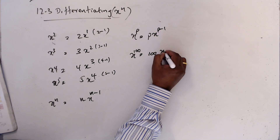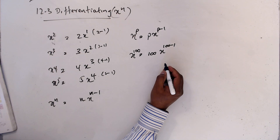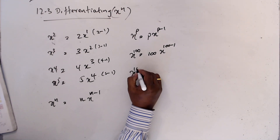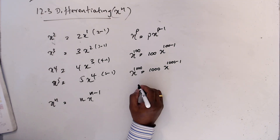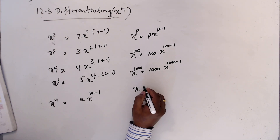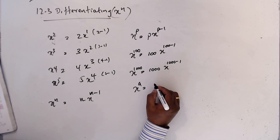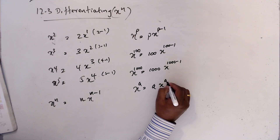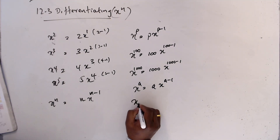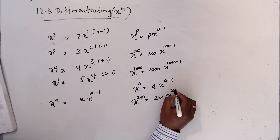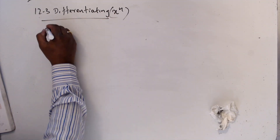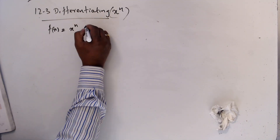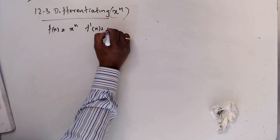For example, x¹⁰⁰ differentiated gives 100·x⁹⁹. If we have xᵃ where a is a constant, the answer is a·xᵃ⁻¹. Then 2m·x²ᵐ differentiates to 2m·x²ᵐ⁻¹. So in general, if f(x) = xⁿ, then f'(x) = n·xⁿ⁻¹.